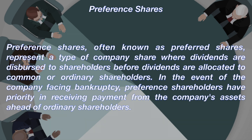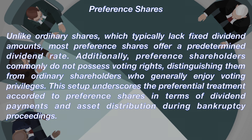Preference shares, often known as preferred shares, represent a type of company share where dividends are disbursed to shareholders before dividends are allocated to common or ordinary shareholders. In the event of the company facing bankruptcy, preference shareholders have priority in receiving payment from the company's assets ahead of ordinary shareholders. Unlike ordinary shares, which typically lack fixed dividend amounts, most preference shares offer a predetermined dividend rate. Additionally, preference shareholders commonly do not possess voting rights, distinguishing them from ordinary shareholders who generally enjoy voting privileges. This setup underscores the preferential treatment accorded to preference shares in terms of dividend payments and asset distribution during bankruptcy proceedings.